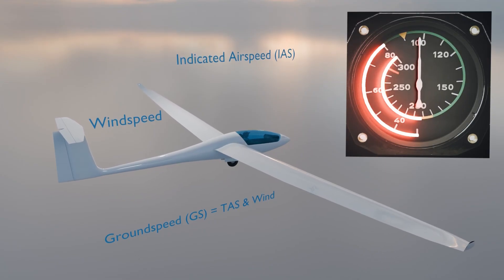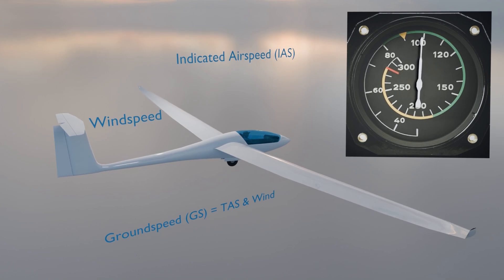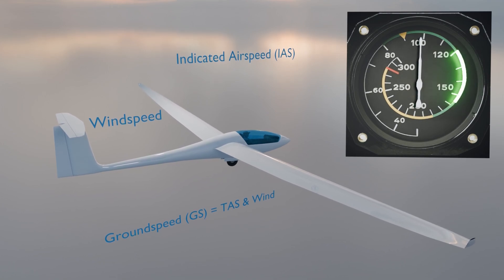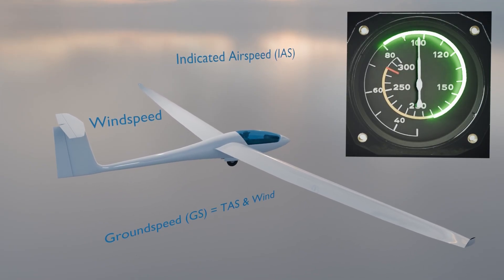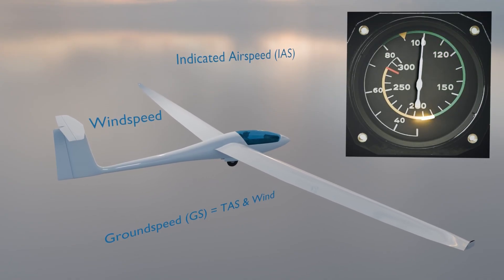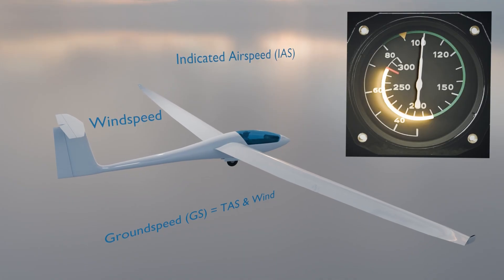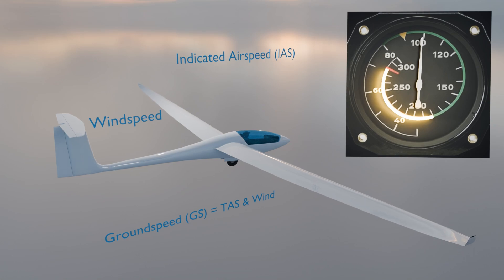The display has several important markings you should know. First, the green arc — this is the normal operating speed range. Within this range you can use full control deflections safely. Then there's the yellow arc — here you're flying fast enough that abrupt control inputs or using full deflection could cause structural damage. This only applies in smooth air; in turbulence you should stay well below this range.